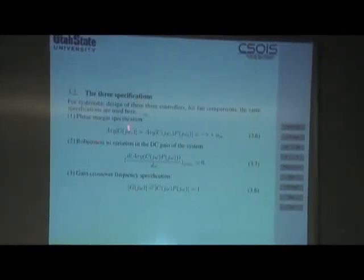Here are our three specifications. The first one is a phase margin specification. Sometimes we need a controller to meet the robustness requirement. So the second one is robustness to variation in the DC gate of the system. According to these three specifications, we can get KP, KD, and Lambda.